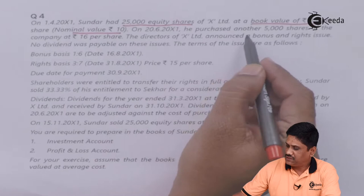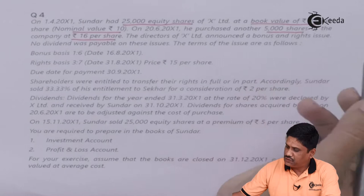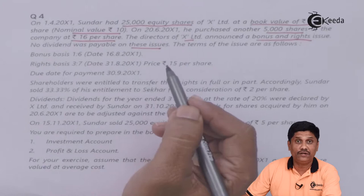On 20th June 2001, he purchased another 5,000 shares of the company at Rs.16 per share. The directors of X Limited announced a bonus and right issue. No dividend was payable on these shares.